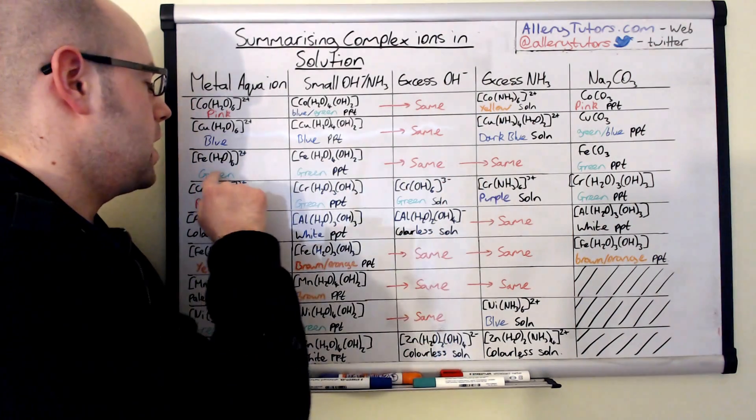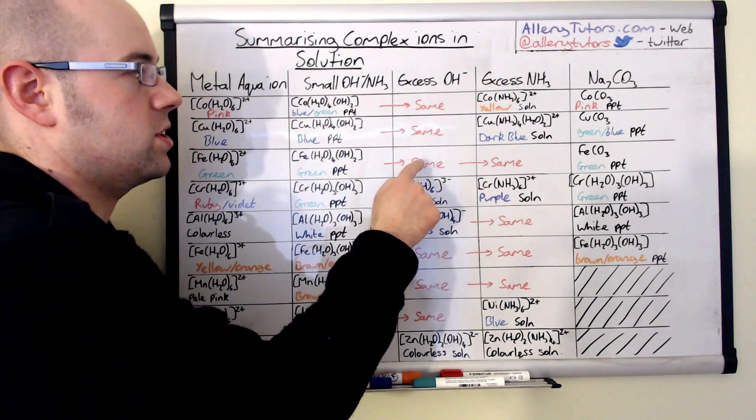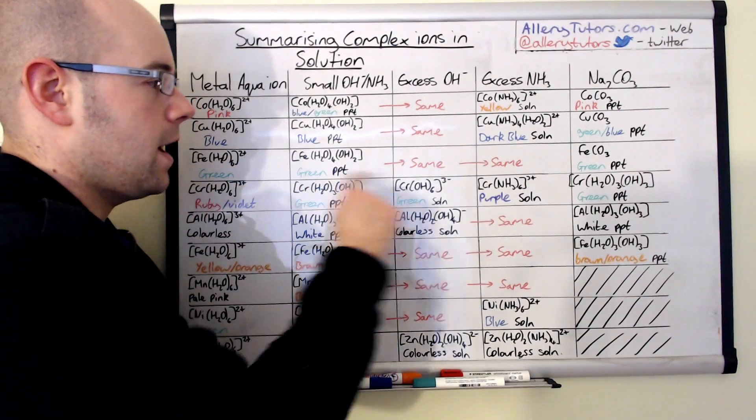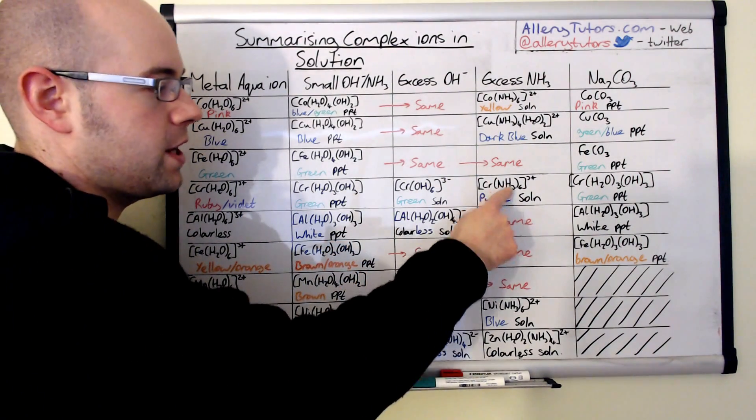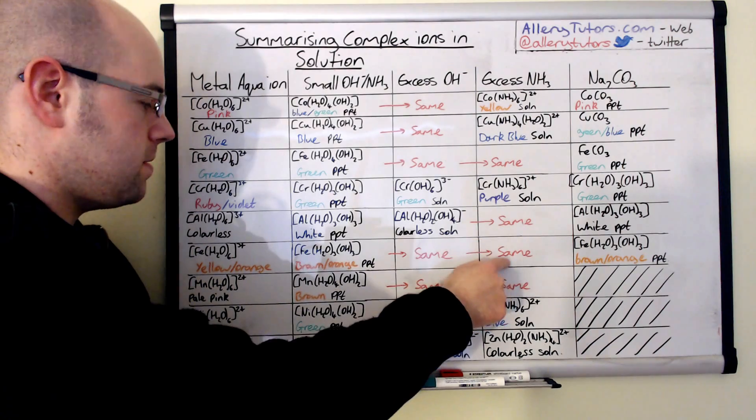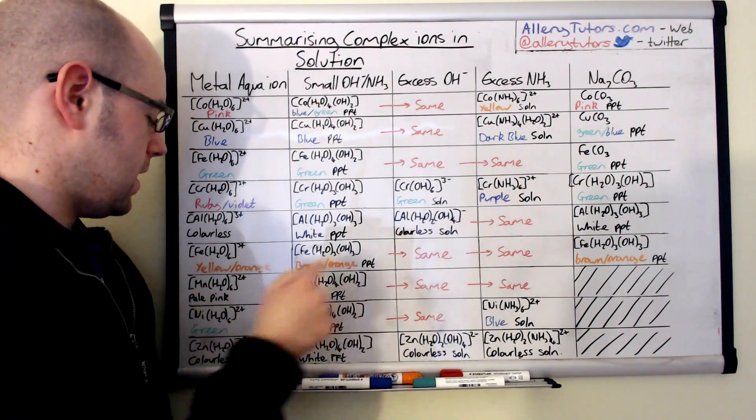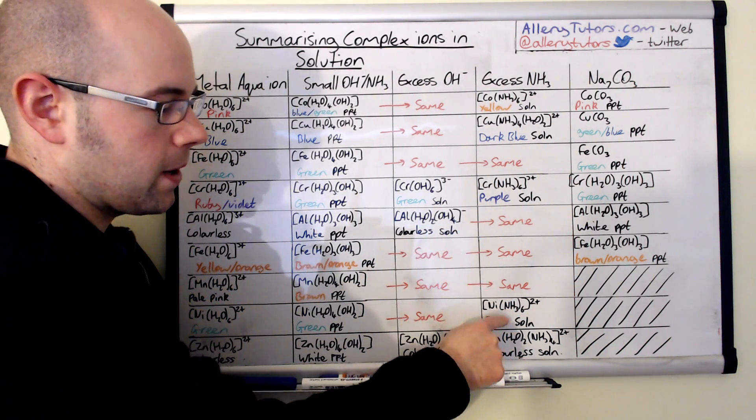There's no change with the iron 2, it's just the same as what it was here. With the chromium 3+ it forms a purple solution, we get complete substitution here. It's the same for your aluminium, it's the same for iron 3 and it's the same for manganese 2+ as well, there's no change there.